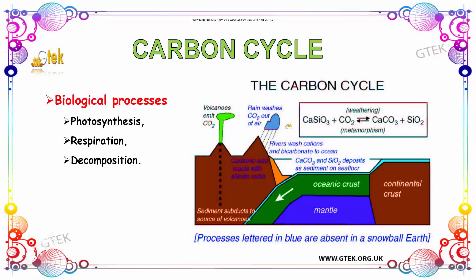Here the volcano emits carbon dioxide. The rainwater washes CO2, and you can see CaCO3 and CO2, which is deposited as sediment. The sediment subducts as the source of volcanoes — this region is called oceanic crust. Here the mantle is represented and the continental crust is depicted. The carbon cycle reaction is: CaSiO3 + CO2 gives CaCO3 + SiO2, in weathering and metamorphism.